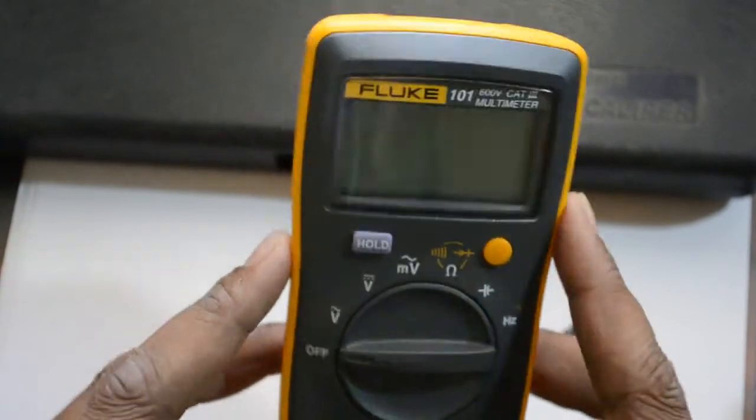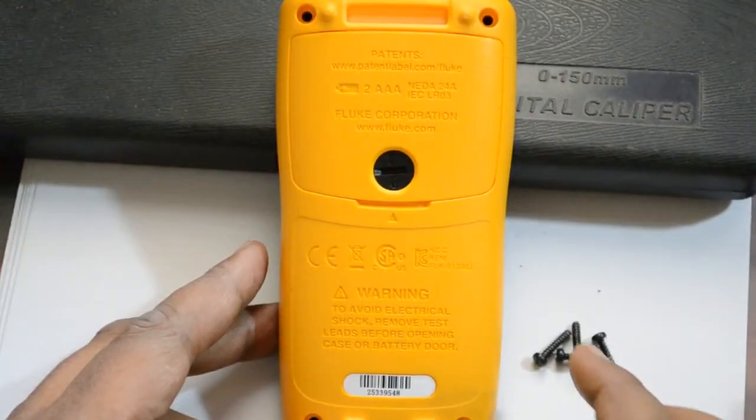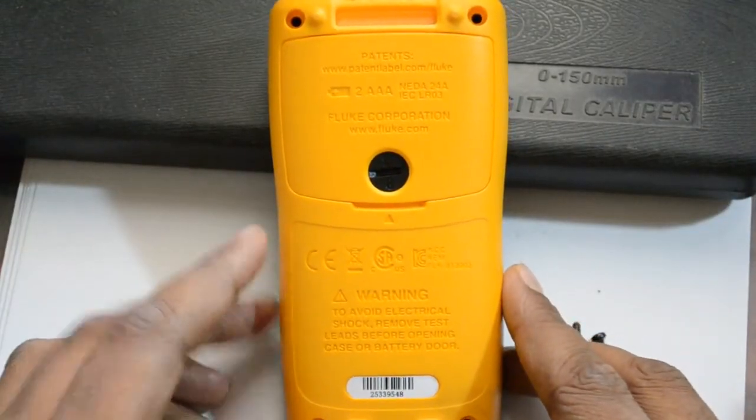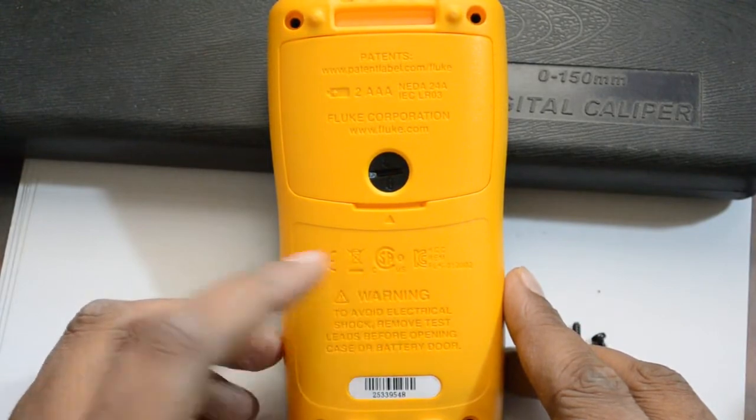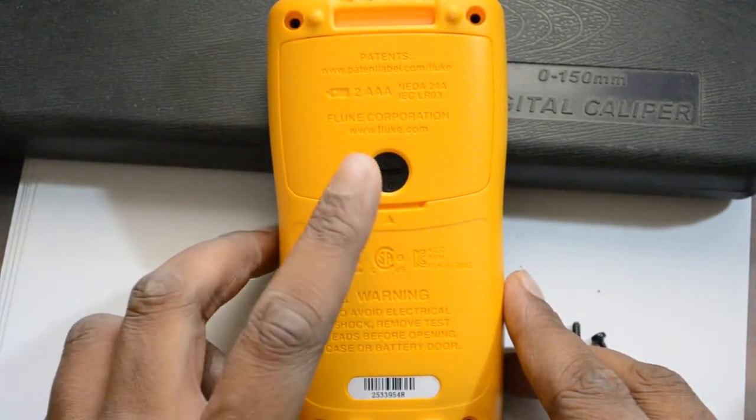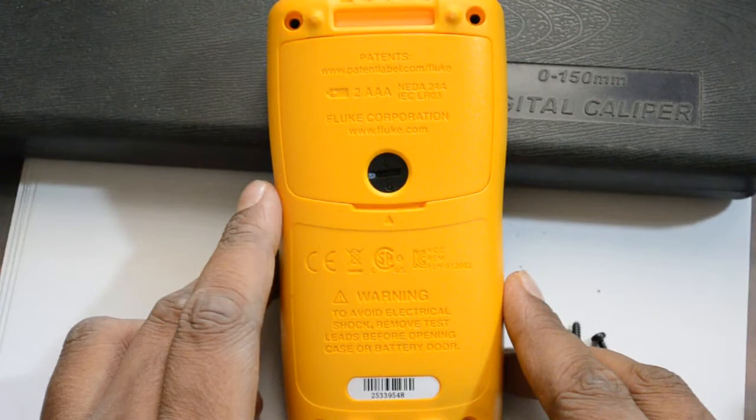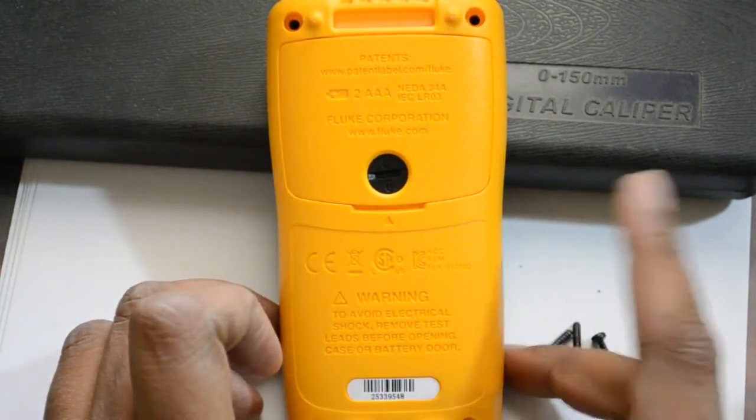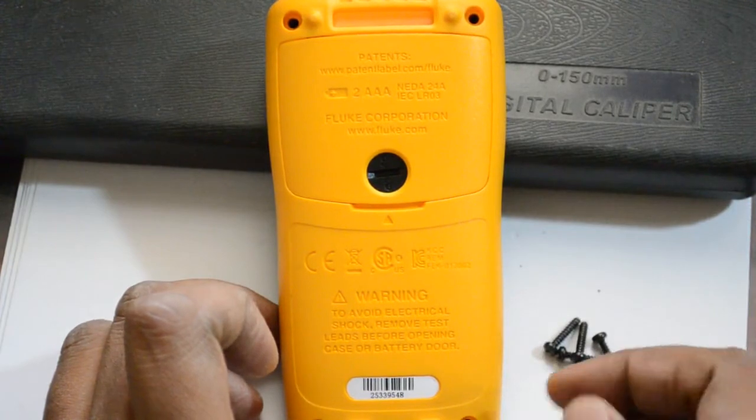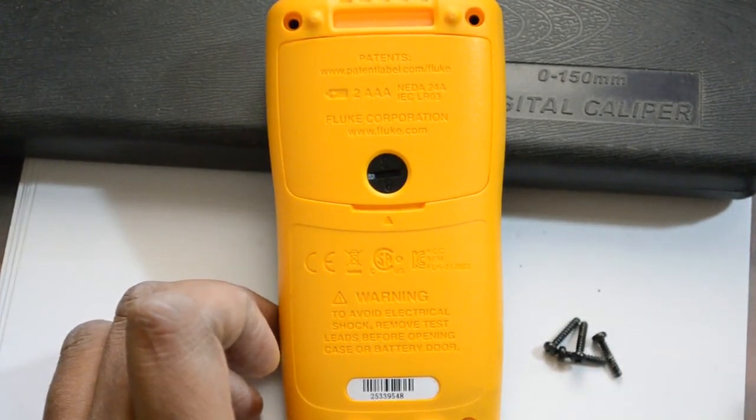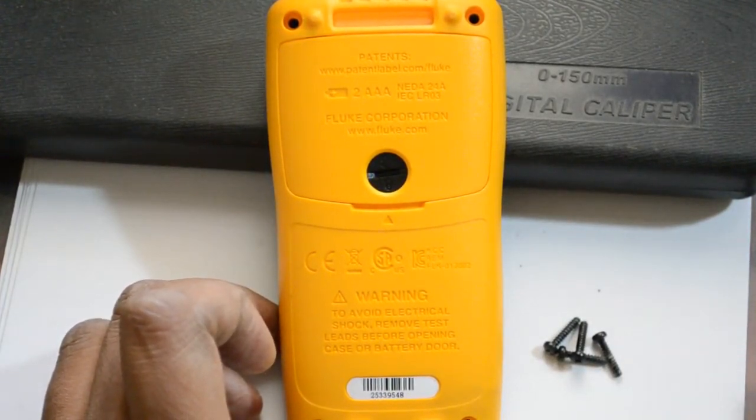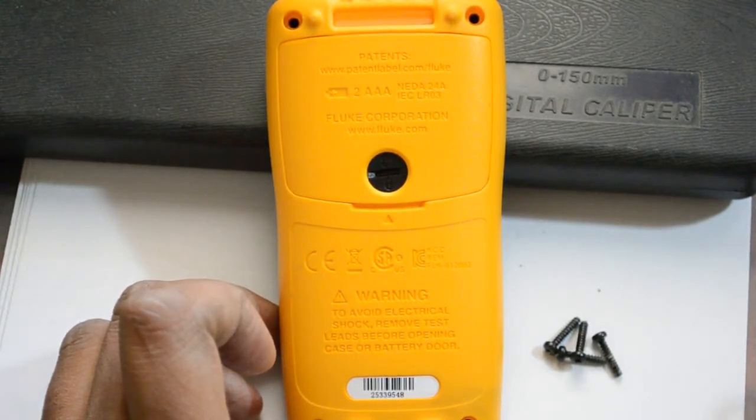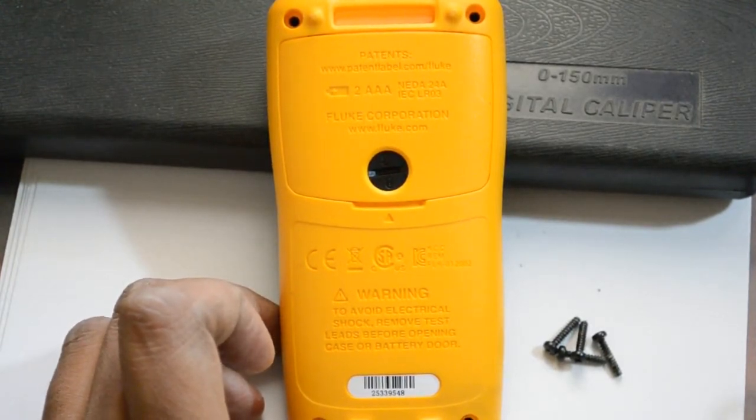But there's no mention of where it's made on the unit itself. So let's take a look at it. Now if you look at this, the back is pretty neat. It has your regular warning signs and the certifications and stuff like that, made by Fluke Corporation and all that. But it doesn't mention anywhere where it was made except for on the box. So what I am going to do now is let's open it up, let's see what we got here inside.